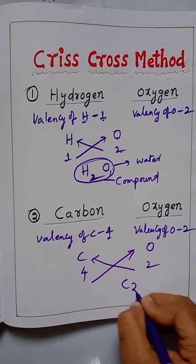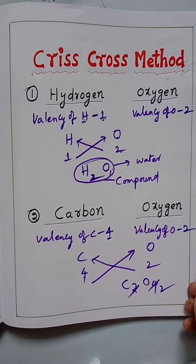Then cross like this. Then what happens: C2O4. Then cancel it to 1, 2, then you finally will get...